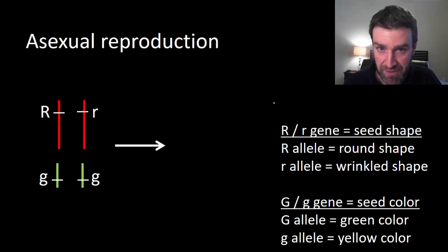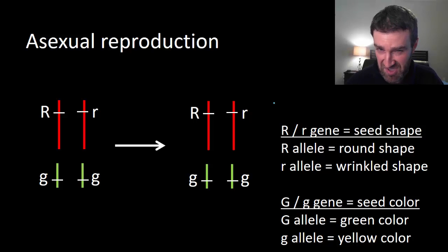Asexual reproduction is a little simpler to think about in terms of how this one parent would pass on its chromosomes. It would just pass on all of them. And so again, barring any kind of mistake while copying all of that DNA, the offspring should be genetically identical to the parent.